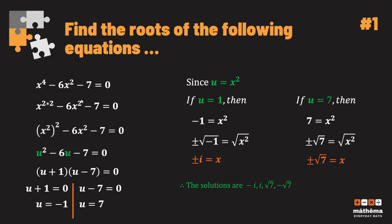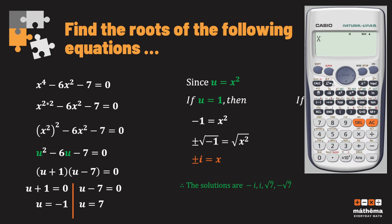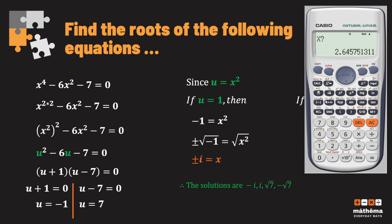We'll verify our answers using a calculator. We have x⁴ − 6x² − 7. If x = √7, the result is 0, and if x = −√7, the result is also 0. We cannot verify the imaginary solutions i and −i on the calculator because they would appear as an error since the number is imaginary. That concludes example one.